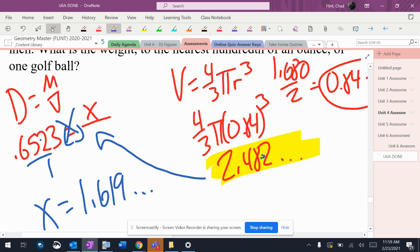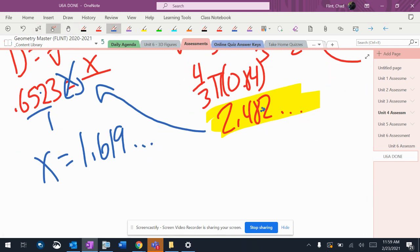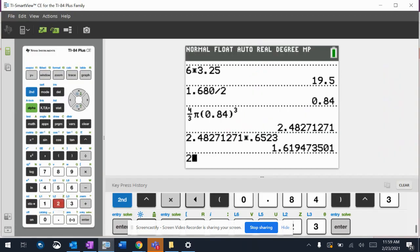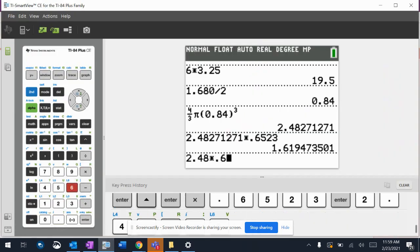1.619. And it says nearest hundredth of an ounce, which means there. So 1.62. All right. Now, if I had rounded this to 2.48, I don't think it would have made a difference. Let's just see.